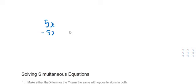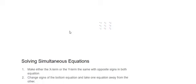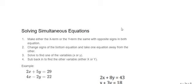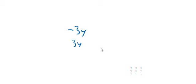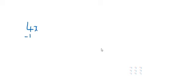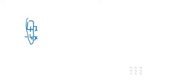Our first step to solving simultaneous equations is to get something like this. It could be minus 3y and 3y, so minus 3y plus 3y, they would cancel out, they would equal 0. Or if I had 4x and minus 4x, they would cancel out and be 0. So I'm trying to get the same number in front of either x or y, and I want one of them to be minus.